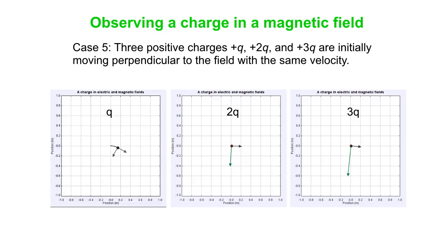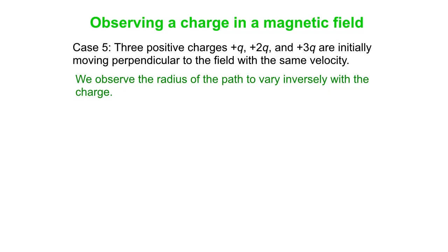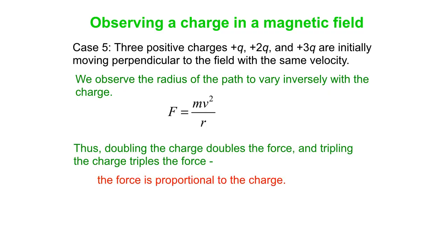With charge Q in a magnetic field, charge 2Q gives half the radius, and charge 3Q gives one-third the radius — with the same mass, same initial velocity. The radius varies inversely with the charge, which tells us the force is proportional to the charge. Again, that's something we saw with the electric field: F = QE, so here we have F proportional to Q and proportional to B.